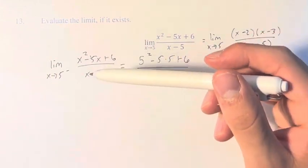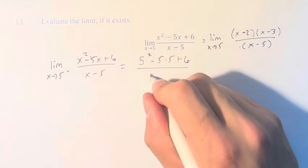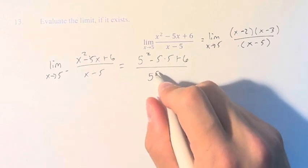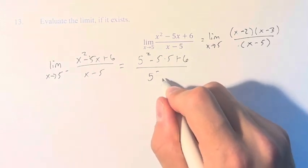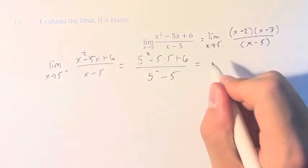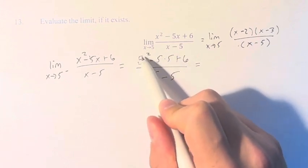This is over the limit as x approaches 5 from the left of x minus 5. So the step we have to take here is to recognize what does it mean to go from 5 to 5 from the left and then subtract 5 from it. So first, let's calculate this. This is 5 squared, which is 25.